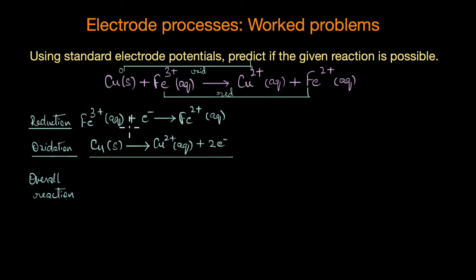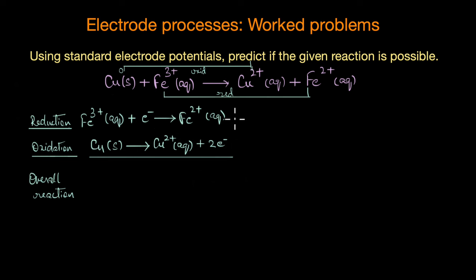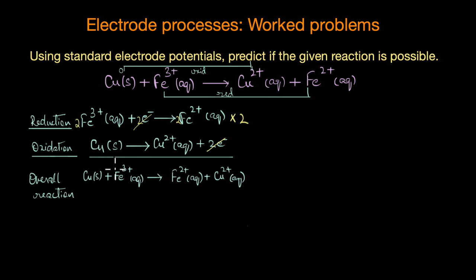Writing the half reactions: Fe³⁺ accepts an electron and changes to Fe²⁺ ions, and copper loses electrons to form Cu²⁺ ions. To arrive at the correct overall reaction, the number of electrons gained in the reduction half reaction must equal the number lost in the oxidation half reaction. We multiply the first reaction by two to get two electrons on each side, giving the balanced overall reaction: Cu + 2Fe³⁺ → 2Fe²⁺ + Cu²⁺.